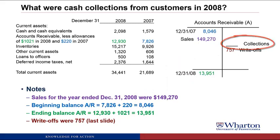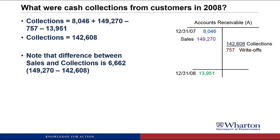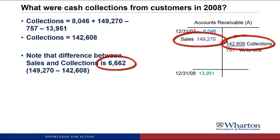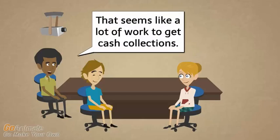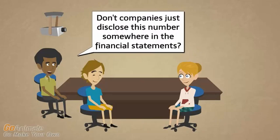Now the only thing missing is cash collections. Taking the beginning balance of 8,046, adding sales of 149,270, subtracting write-offs of 757, and subtracting the ending balance of 13,951, we end up with cash collections of 142,608. Note that the difference between sales and cash collections is 6,662 — which was the number on the statement of cash flows for the increase in gross accounts receivable. Most companies don't explicitly disclose cash collected from customers, and the only way to figure it out is to work through the T-accounts.